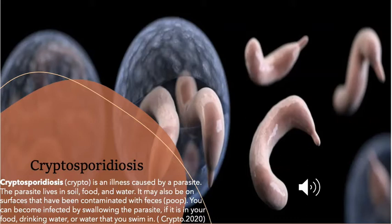Cryptosporidiosis is an illness caused by a parasite. The parasite lives in soil, food, and water. It may also be on surfaces that have been contaminated with feces. You can become infected by swallowing the parasite if it's in your food, drinking water, or water you swim in.